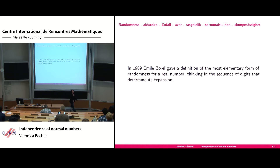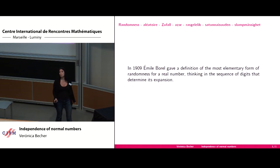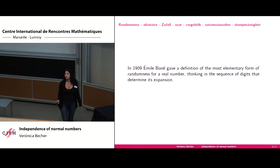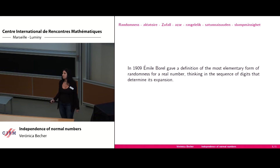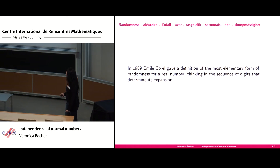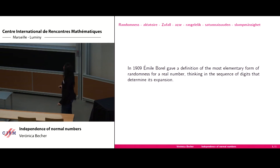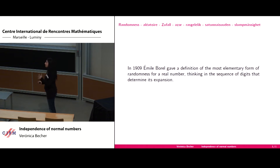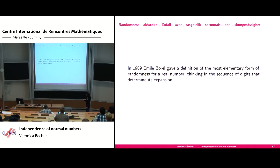100 years ago, Emil Borel gave a definition of the most elementary form of randomness for real numbers, thinking about the sequence of digits that determine the expansion of these numbers, and he called them normal numbers.